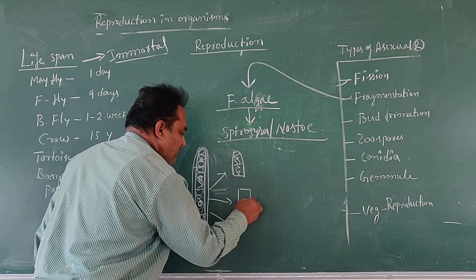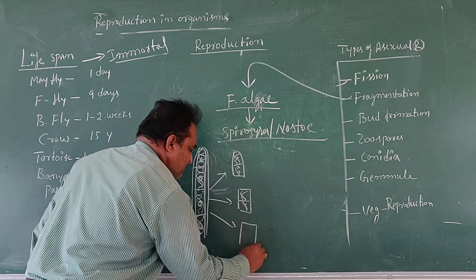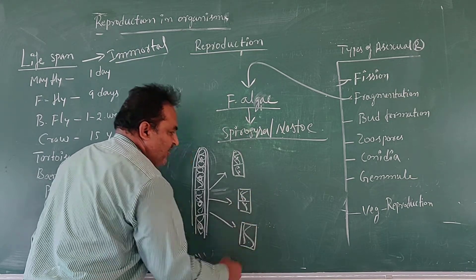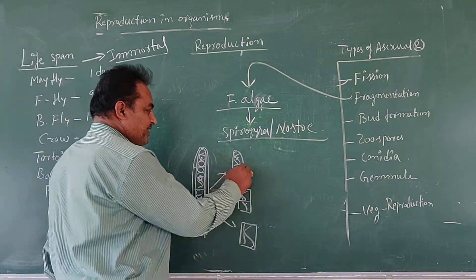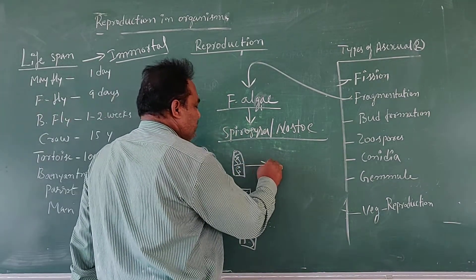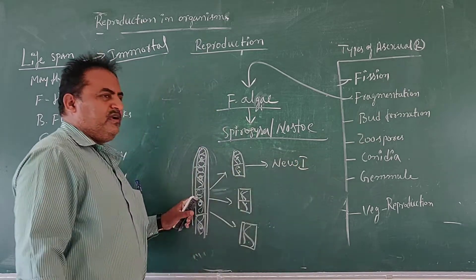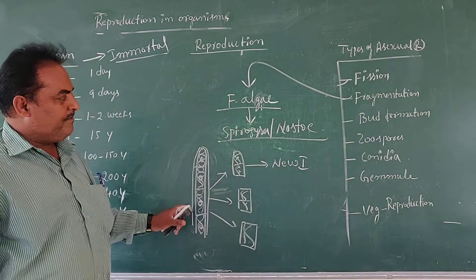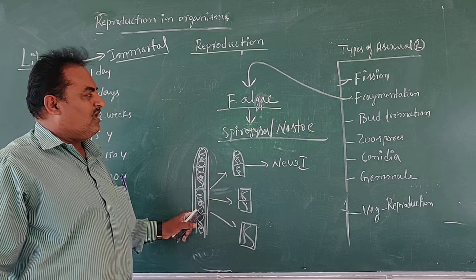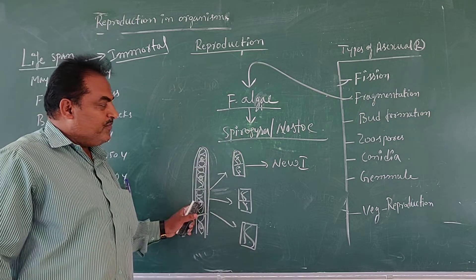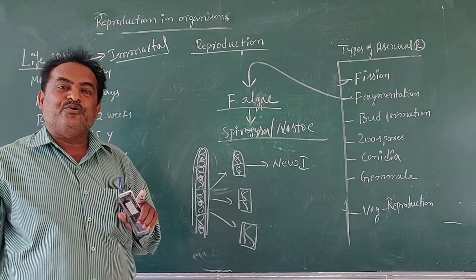Such pieces are called fragments. Each fragment should develop into a new individual. One filamentous alga, or Spirogyra, can produce three fragments which are released.